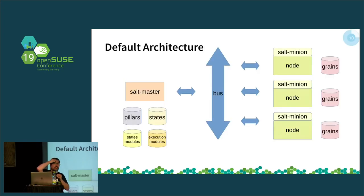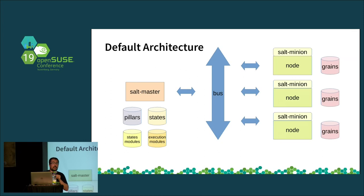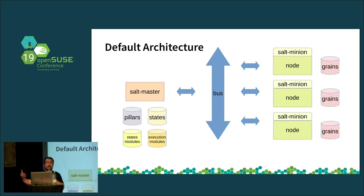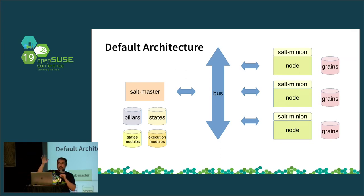The typical architecture in Salt: on one side you have the Salt master, which contains the pillar data shared between minions, the states described in SLS documents, the state modules in Python, and execution modules. On the other side you have different minions. Each minion publishes data called grains — MAC address, IP address, ID, number of hard disks, amount of memory.